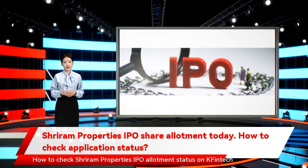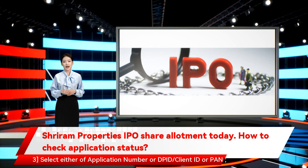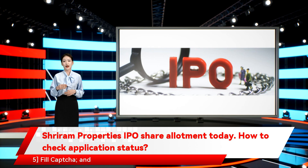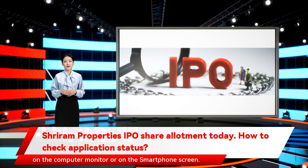How to check Shriram Properties IPO allotment status on KFintech: Step 2 — Select Shriram Properties IPO. Step 3 — Select either Application Number, DPID/Client ID, or PAN. Step 4 — Enter the Shriram Properties IPO application number. Step 5 — Fill in the CAPTCHA. Step 6 — Click the Submit button. Your Shriram Properties IPO allotment status will then appear on your computer monitor or smartphone screen.